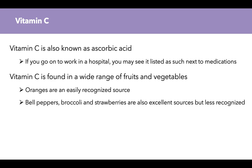We'll start with vitamin C, also known as ascorbic acid. This is important for those of you who may go on to work in a hospital because you will see it listed as such in the medications list. Vitamin C is found in a wide range of fruits and vegetables. Oranges tend to be an easily recognized source by the general population, but we shouldn't forget things like bell peppers, broccoli, and strawberries, which are also excellent sources.